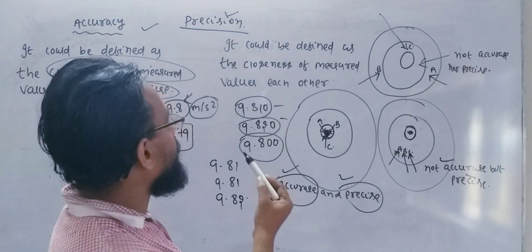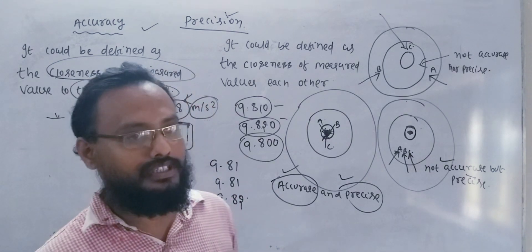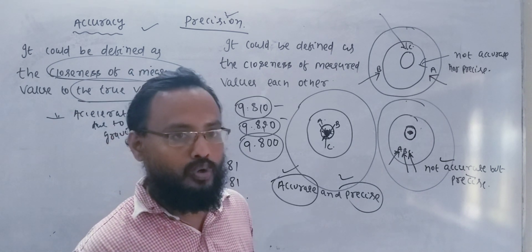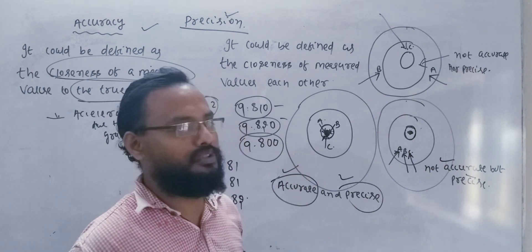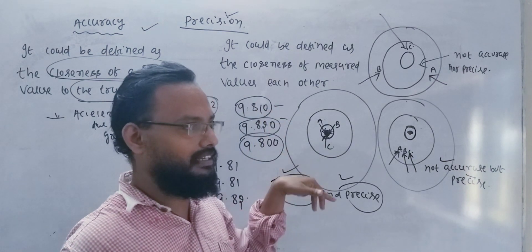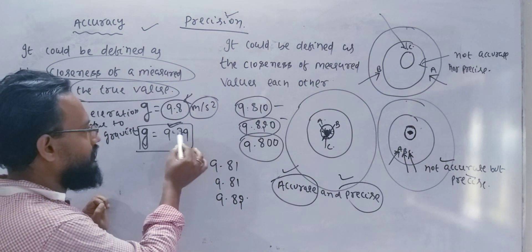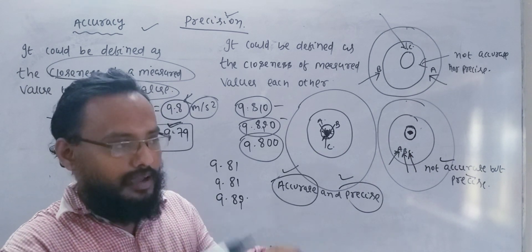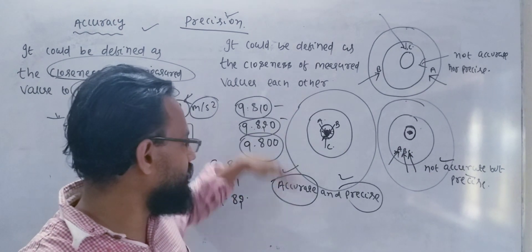Not accurate, not precise — that is one case. Accurate and precise is another case. When points are close to each other and close to the true value, that is both accurate and precise. The idea is to determine the closeness to the true value as a measure of accuracy.